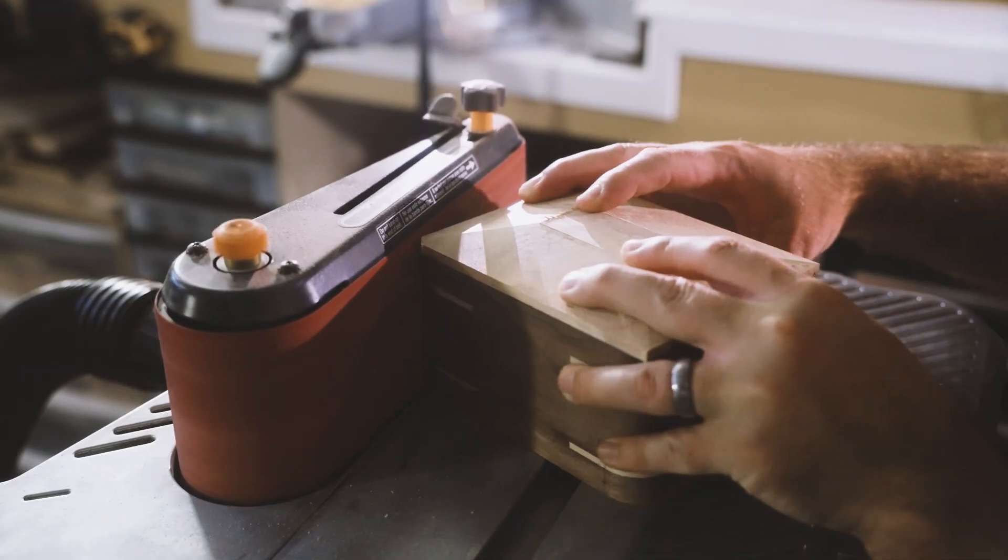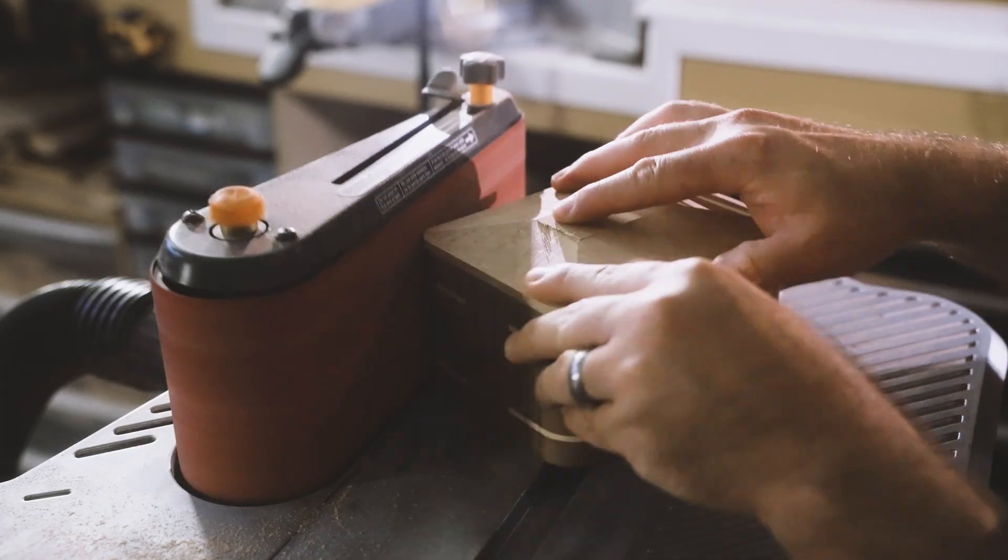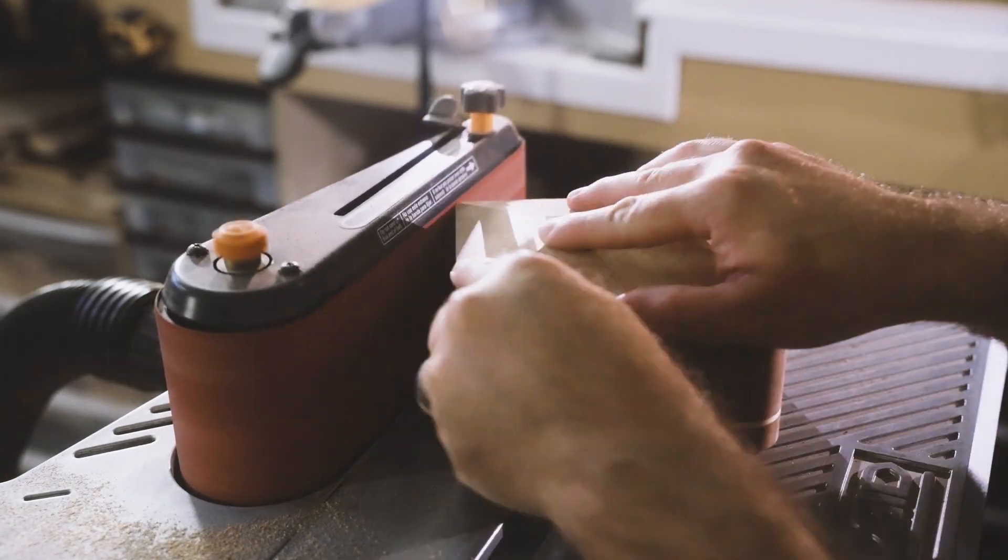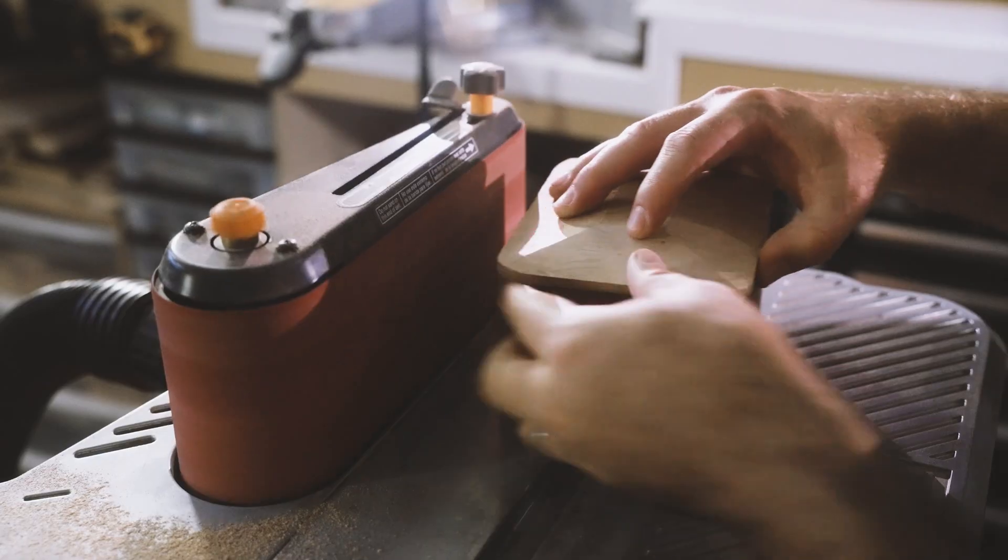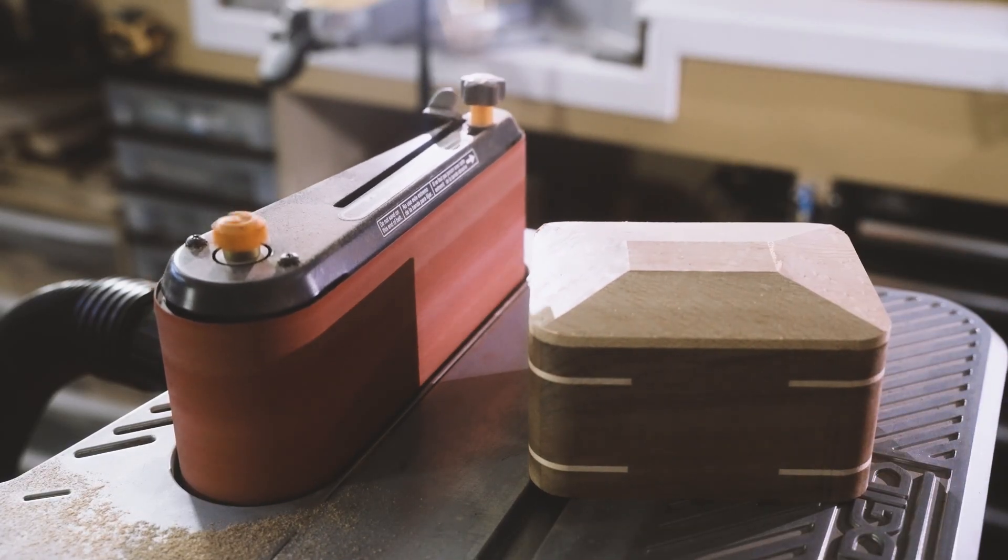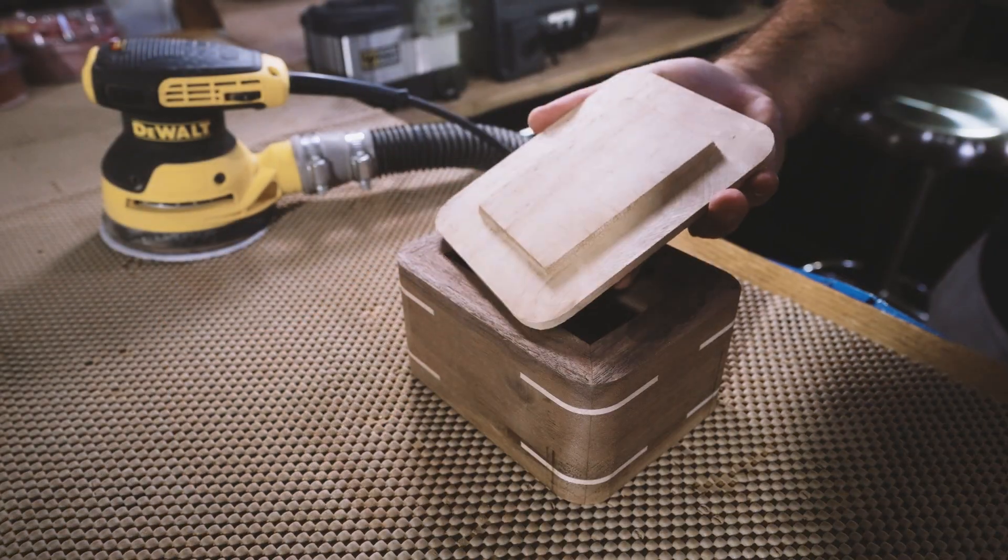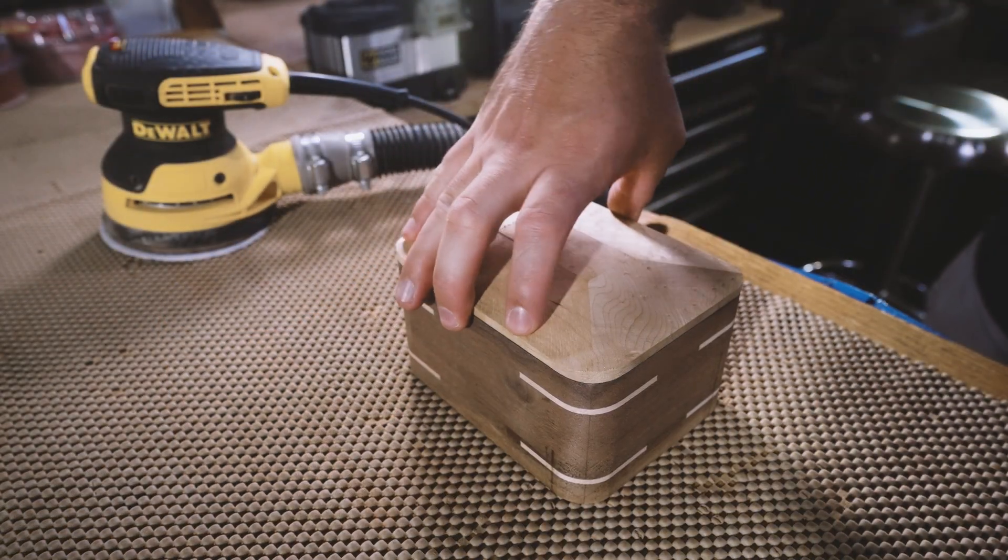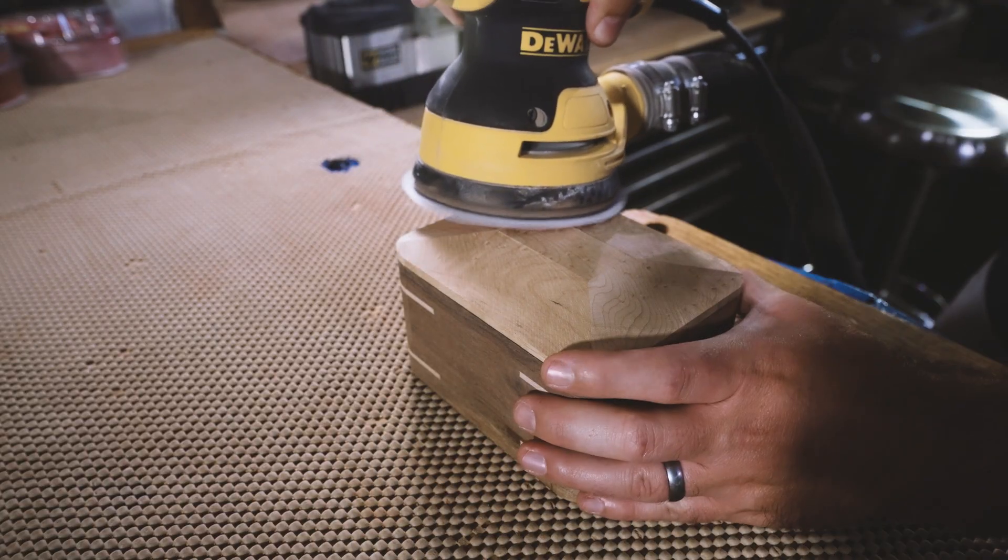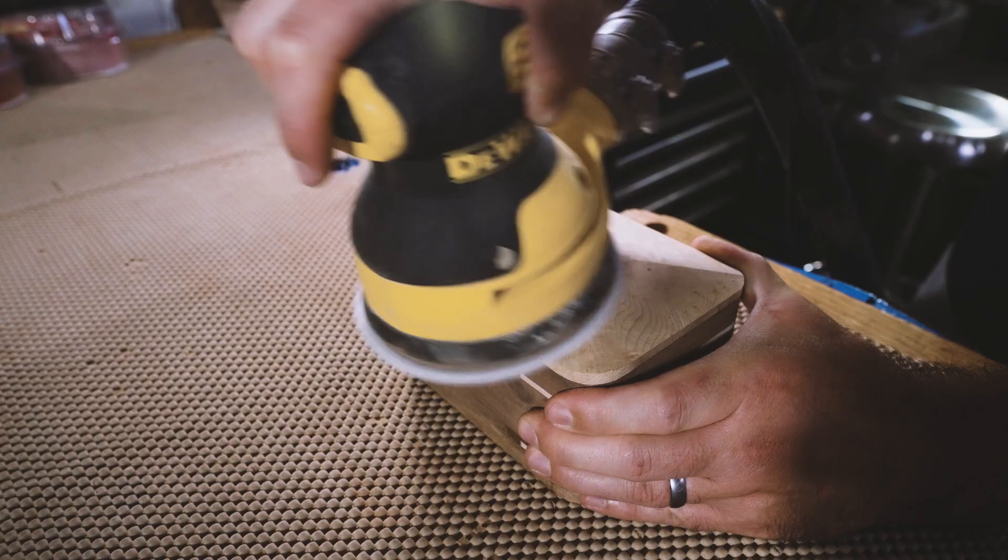I'm using my spindle sander again to round over the corners of the lid so they match the shape of the box. I'm going to use my random orbit sander to refine the shape of the lid and sand everything smooth with progressively finer grits of sandpaper.